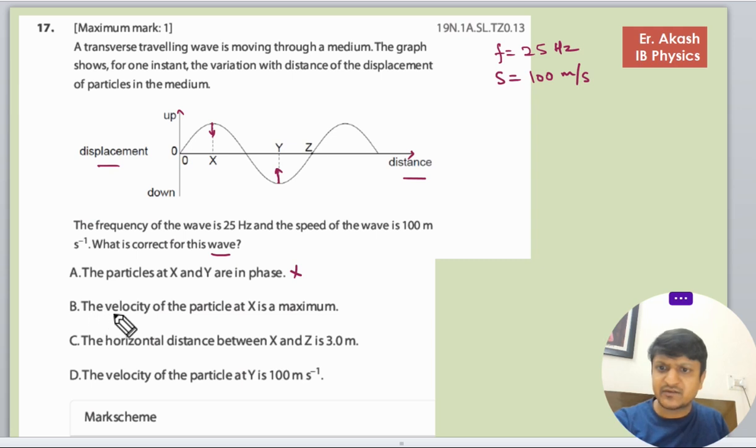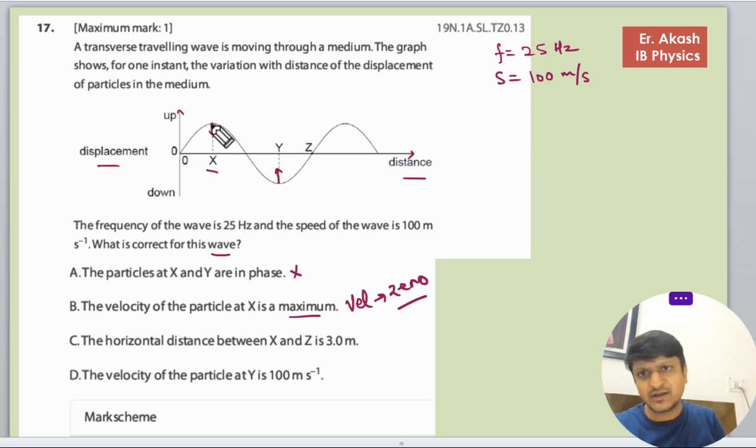Option B: The velocity of the particle at X is maximum. No, at X the velocity is zero because it is the extreme point. So once the particle reaches the extreme, it came back, so at this instant the velocity becomes zero.